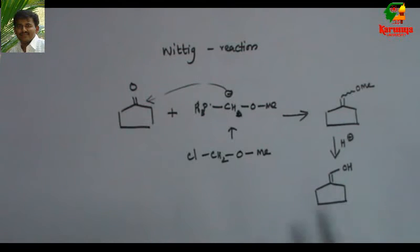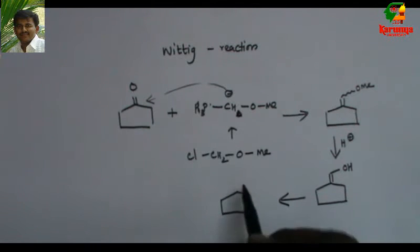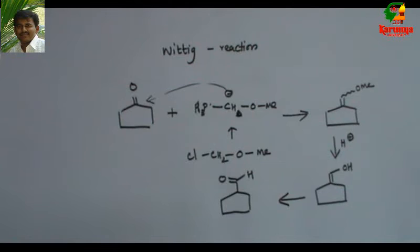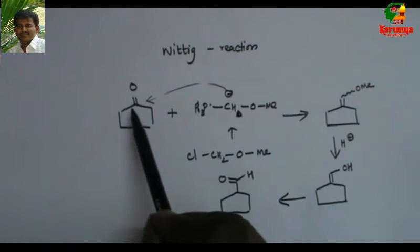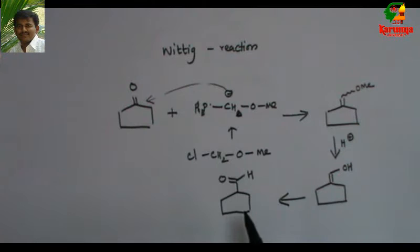Since it is enol ether, when I add H+, enol ether undergoes hydrolysis to give this enol. When I write this in keto form, in this case it is aldehyde. So I get this compound. Now compared to this there is one carbon extra. So this is called homologation.